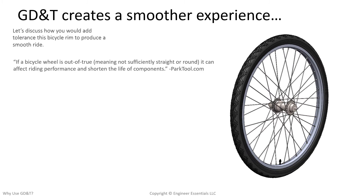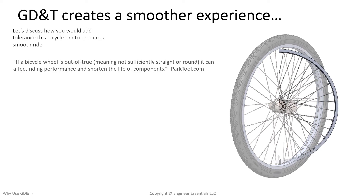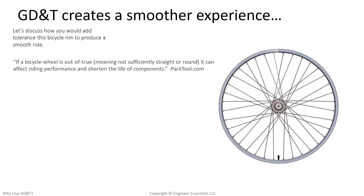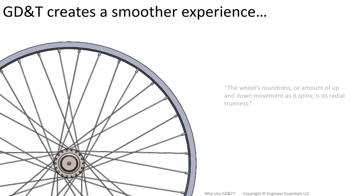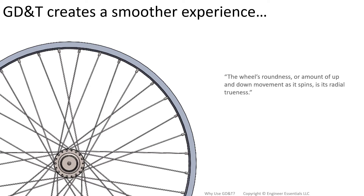We'll try to cover that with the basic example of something like a bicycle wheel. We all know that the rounder a bicycle wheel is, the smoother the experience will be. So how do you define how round that bicycle tire should be? The wheel's roundness, or amount of up and down movement as it spins, is considered its radial trueness.